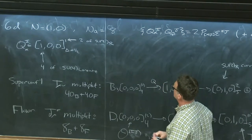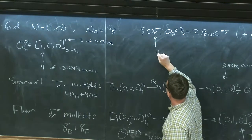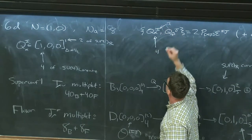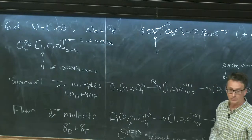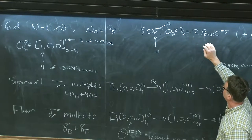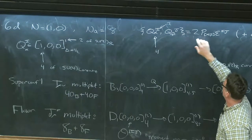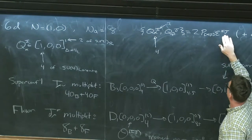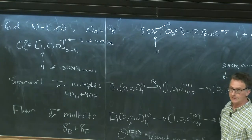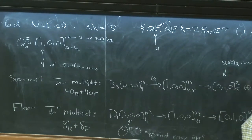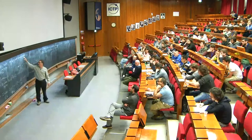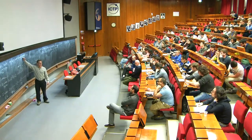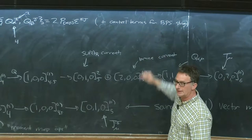The supersymmetry algebra has supercharges in the 4 of the Lorentz group and in an SU(2) R-symmetry doublet. We need two of them for the algebra to work right, because this combination is symmetric and we get the vector by antisymmetrizing two spinors. We need this extra SU(2) quantum number to make things work. In parentheses, there are also central terms for BPS strings — these theories have BPS-saturated strings — but I'll leave those off for now.